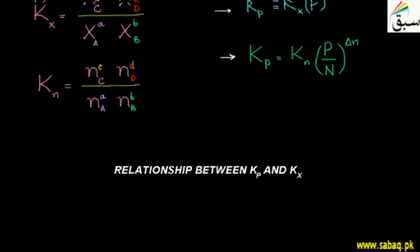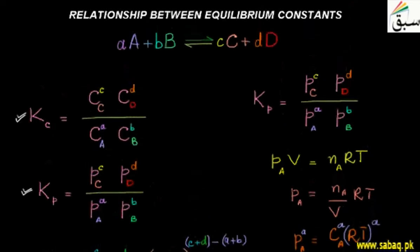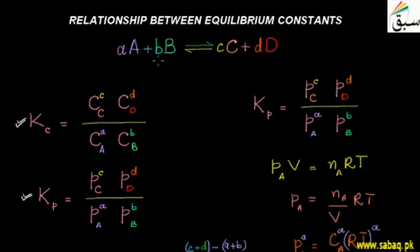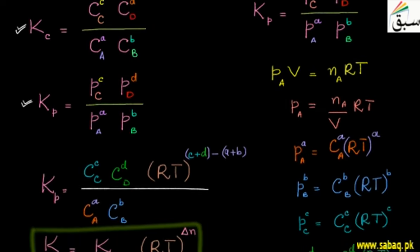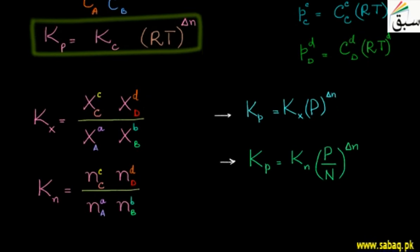For this, we will recall what we have seen before. We have seen a reaction and different equilibrium constants in terms of their relationships. We have seen Kc — equilibrium constant in terms of concentration — Kp, Kx, and Kn — equilibrium constant in terms of number of moles.